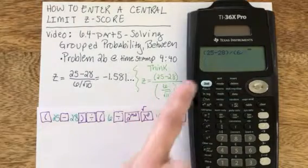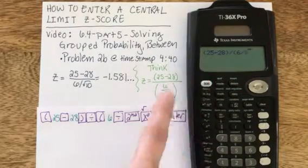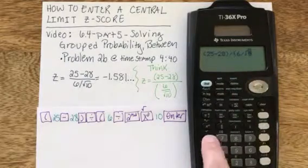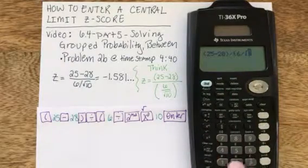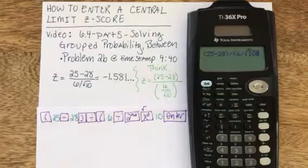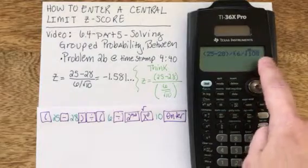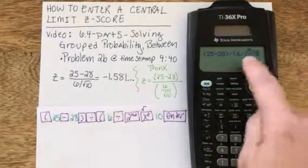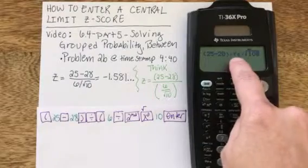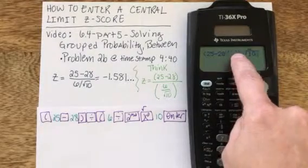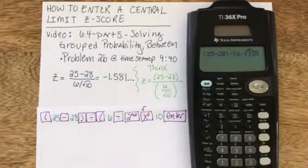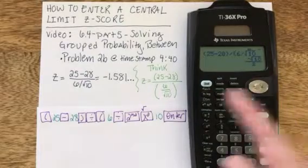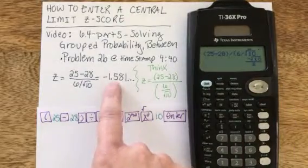That means I first need to hit the light blue second button, and then X squared to physically get the square root. I can now enter the 10. It feels like maybe I need to right arrow to get out of the square root, or use an end parenthesis to finish off the denominator, but if I just go ahead and hit enter — it doesn't look like I got the right answer.